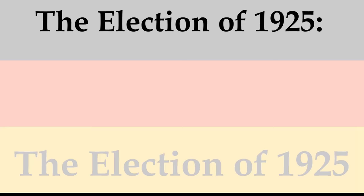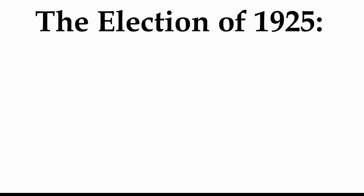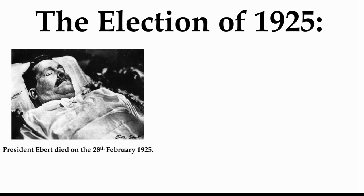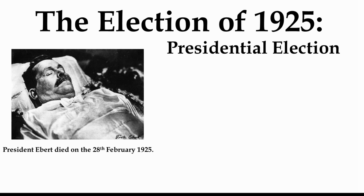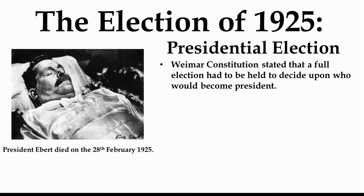So the election of 1925 was actually a presidential election, and the reason it was held was because Friedrich Ebert, who had been president since the get-go of the Weimar Republic on the 9th of November 1918, died on the 28th of February 1925. So they had to elect a new president. They were going to follow the Weimar Constitution, which says that a full election has to be held to decide upon who becomes president.